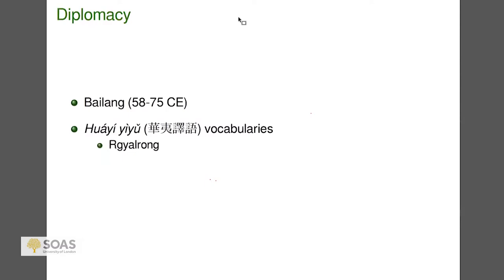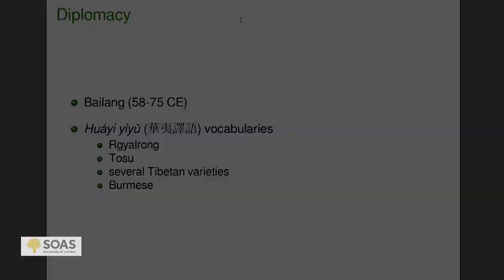Looking at languages interesting to us: Gyarong is covered, Tosu is covered, several Tibetan dialects — particularly Sichuan dialects like Baima — and Burmese. Vietnamese also. For those languages with scripts, they give a script sample and the words in Chinese pronunciation. This is a useful resource on historical phonology and, in a sense, the very earliest generation of Sino-Tibetan linguistics.